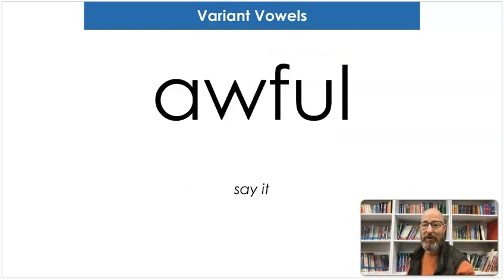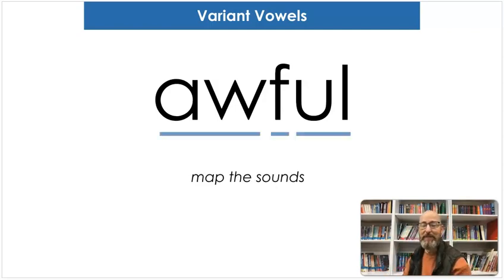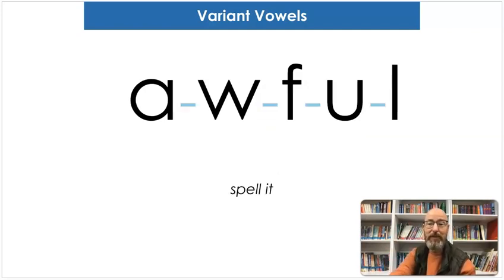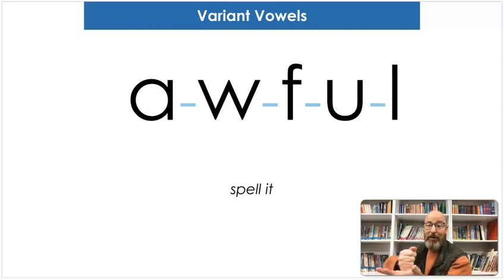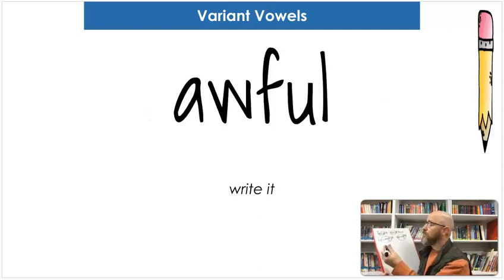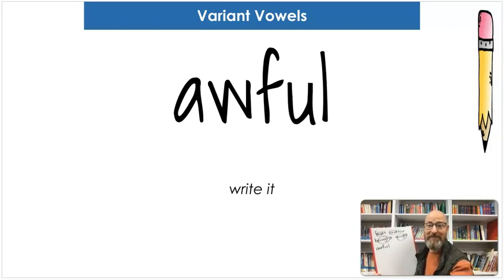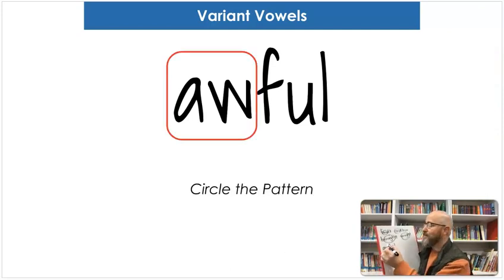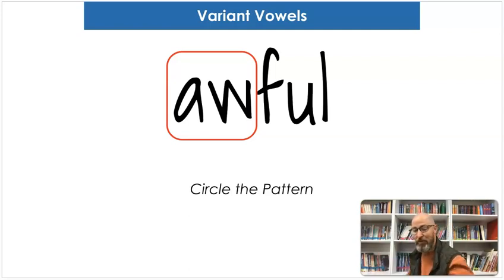Our next word is awful. Say awful. Map the sounds: A-W-F-U-L. Aw, f-u-l. Awful. Spell it: A-W-F-U-L. Awful. And let's write it: A-W-F-U-L. What makes the "aw" sound? A-W. That's correct. Circle it. If something is awful, it's bad.